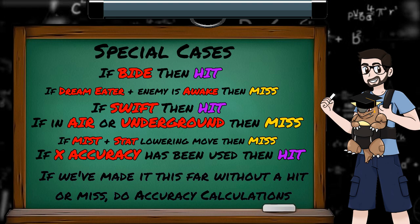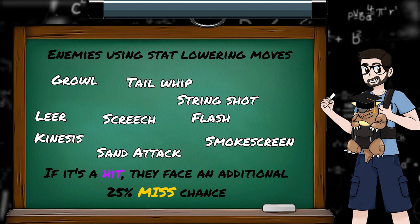So I'll just end with the final, final fact, that any moves used by the opponent which count as a stat modifier down move, for example, growl, leer, sand attack, after the accuracy check is complete and the move has been calculated to hit, they have to make it past an additional 25% chance to miss. So an enemy Sandshrew with 100% accuracy will miss 25% of its sand attacks, to which I say, not good enough.